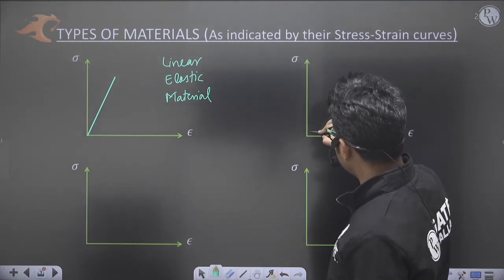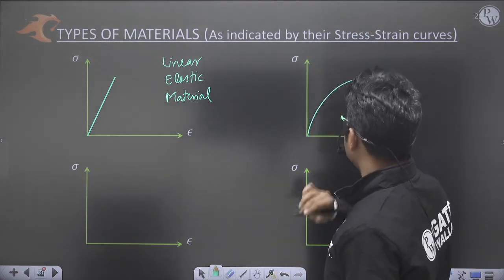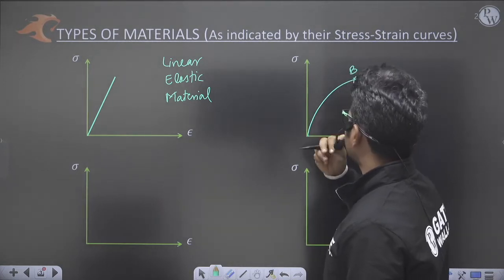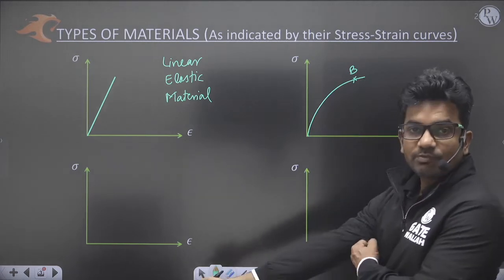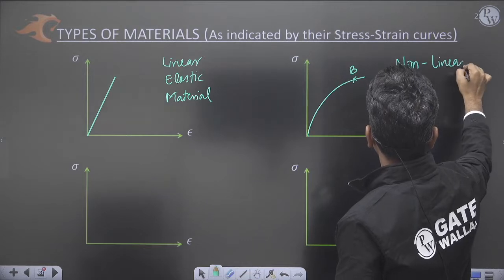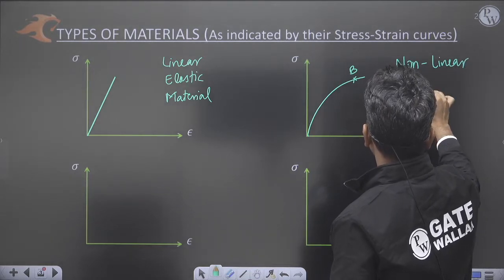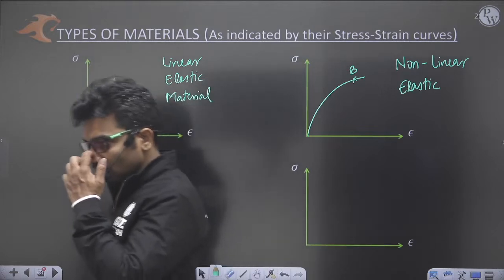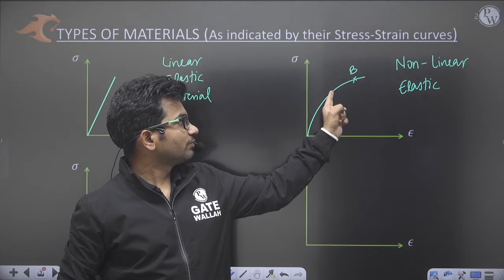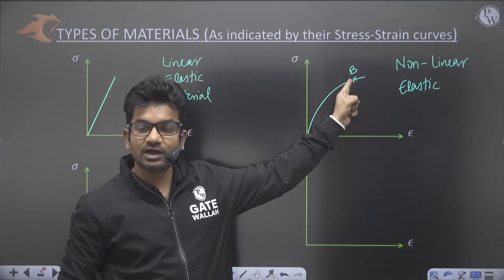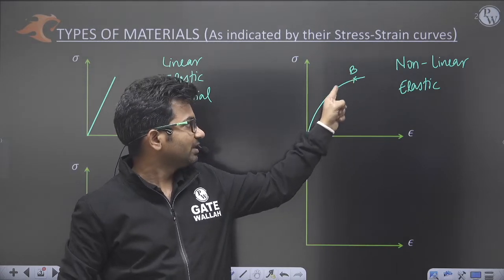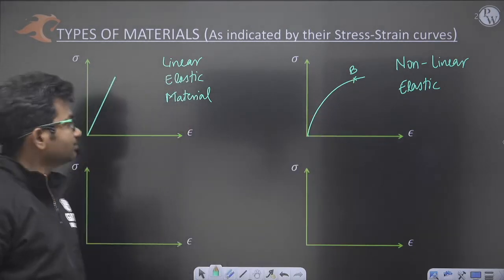The next type is non-linear elastic material. If the stress-strain curve is non-linear up to the elastic limit B, this material is called non-linear elastic. If we load the material up to that point and then remove the load, the material will regain its original dimensions.